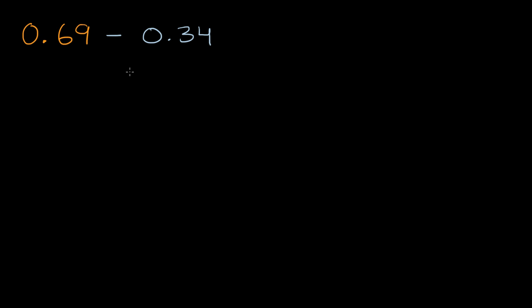So there's a bunch of ways to think about it. One way to think about it is this is 69 hundredths, and from that we are subtracting 34 hundredths. And so this boils down to I have 69 of something, in this case hundredths, and I'm gonna take away 34 of them. So what am I left with?